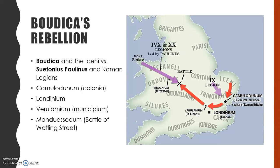Remember that all of these different locations — Camulodunum, Londinium, Verulamium, and then Manduessedum, which is the place of the final battle — were all Roman settlements, and the Romans had been there for quite some time before Boudicca's rebellion. You're going to be assessing her as a true warrior, leading her people and involved in the battle herself — the final battle between Boudicca, her people the Iceni, and also some of the other tribes who joined with her, and the Romans.